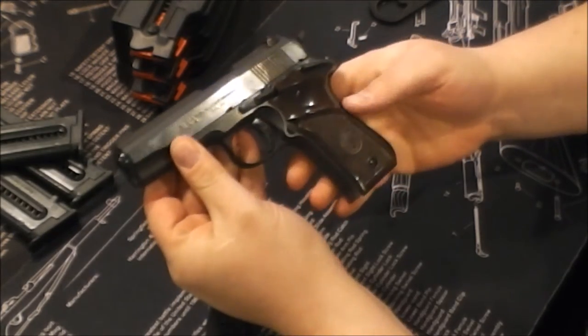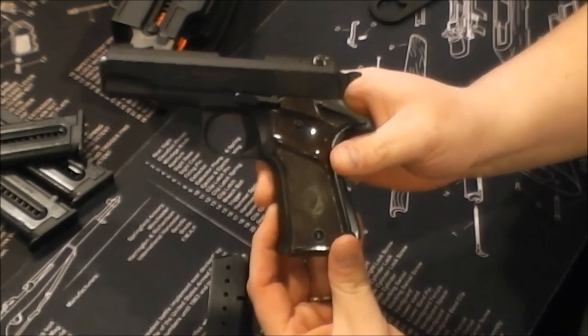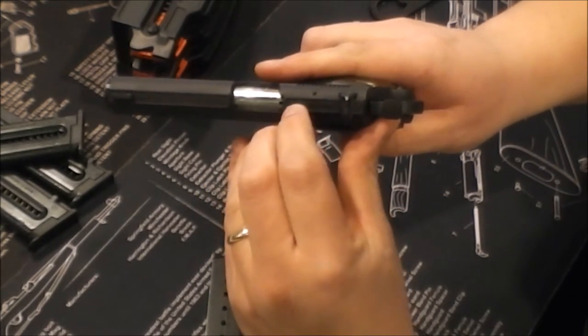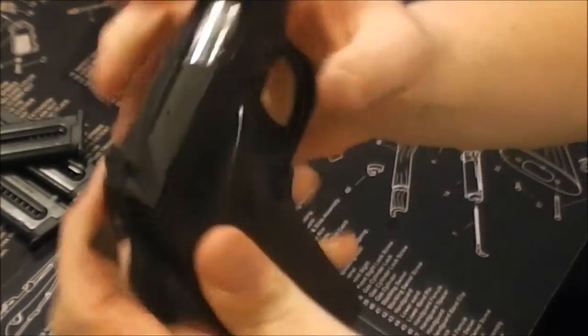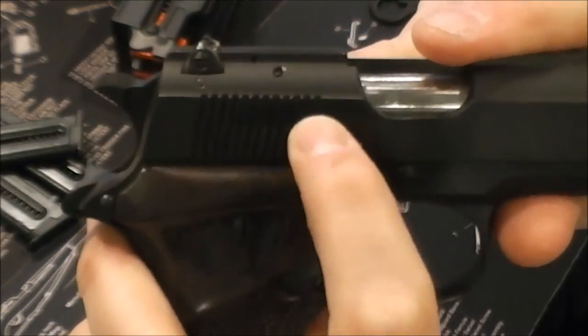It is a fairly faithful copy of the John Browning design. There are some notable differences. The first one is that it has a loaded chamber indicator. This little piece of metal right here will pop up when there's a round in that chamber. Of course, it is an external extractor. Right there.